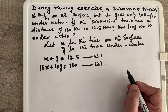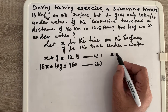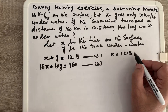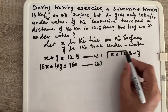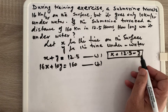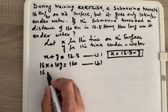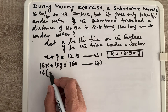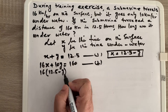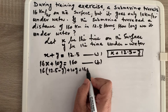I will use the substitution method to solve these variables. From Equation 1, x = 12.5 − y. I substitute this value of x into Equation 2, giving: 16(12.5 − y) + 10y = 160.